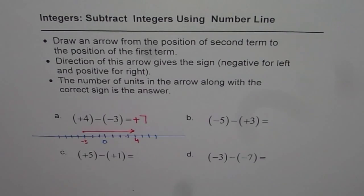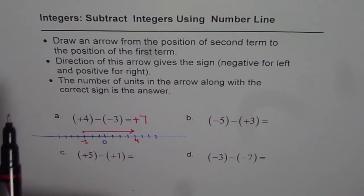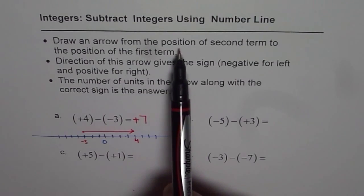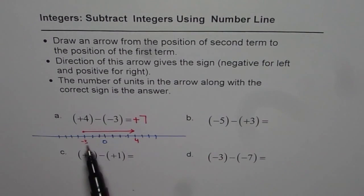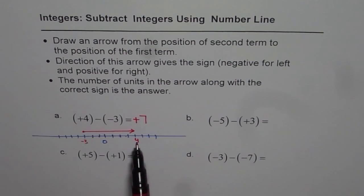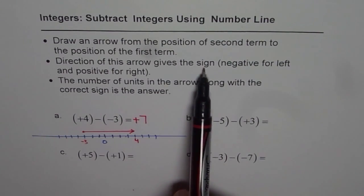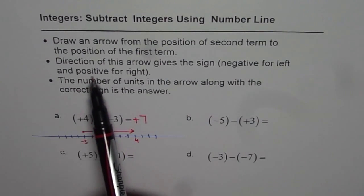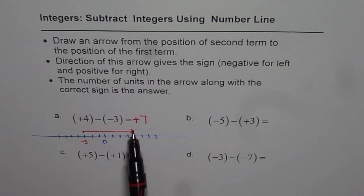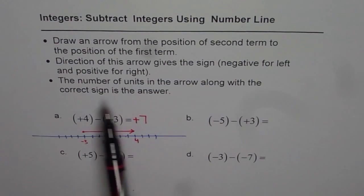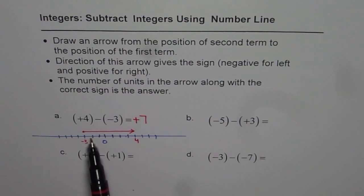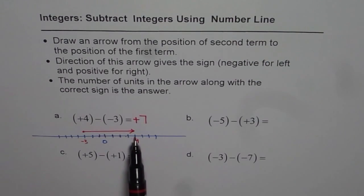Here are the steps written for you. First step: draw an arrow from the position of the second term to the position of the first term. The second term was minus three and the first term is plus four. Draw an arrow from second to first. The direction of the arrow gives the sign — negative for left and positive for right. Since we are moving right, the answer is positive. The number of units along the arrow — one, two, three, four, five, six, seven — along with the correct sign is the answer.